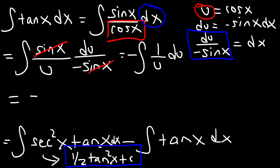The antiderivative of 1 over u is the natural log of u. And u is equal to cosine. So this is going to be ln cosine of x. Now, there's a negative 1 in front of the natural log symbol. So I'm going to move that to the front.